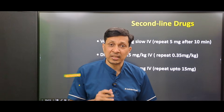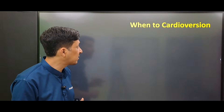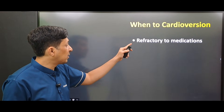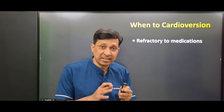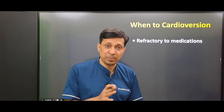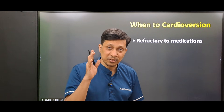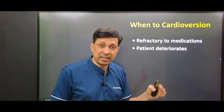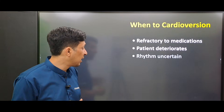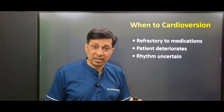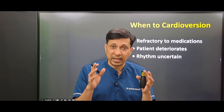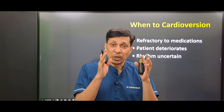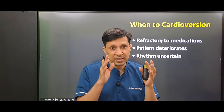Can we use cardioversion in a stable patient? Yes — there are certain conditions where cardioversion can be used in a stable patient: if the SVT is refractory to medications despite giving adenosine or second-line drugs, if the patient is deteriorating, or if the rhythm is uncertain — you are not sure if it is SVT or ventricular tachycardia. In these three conditions you can do cardioversion in a stable patient.